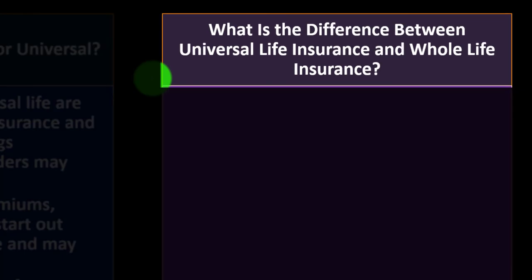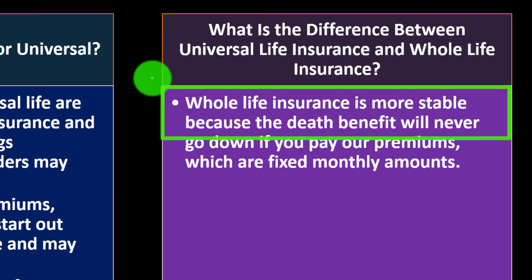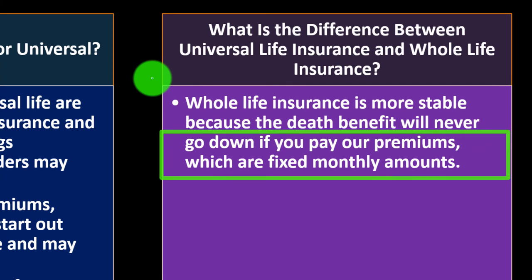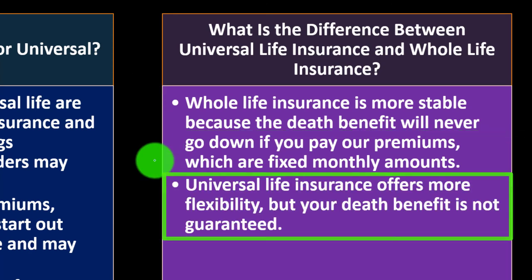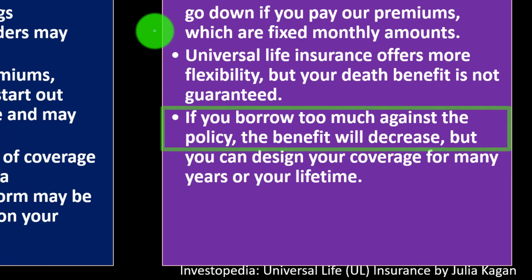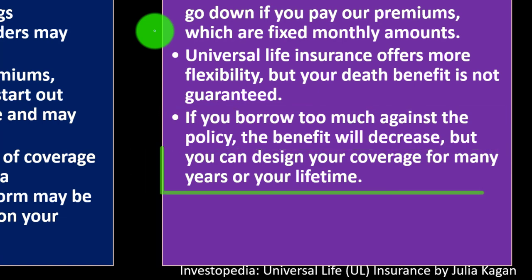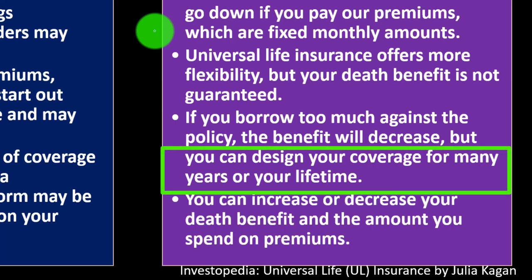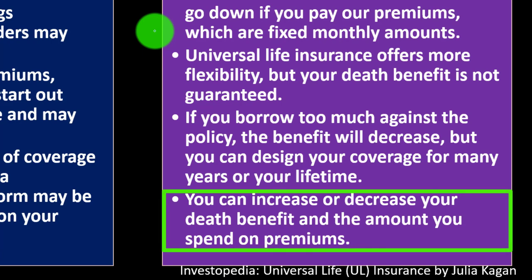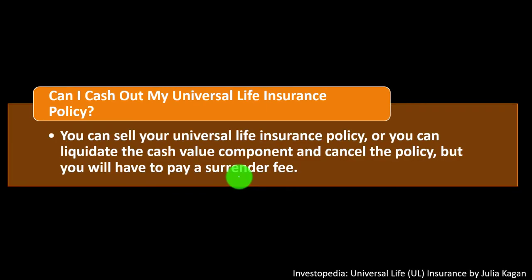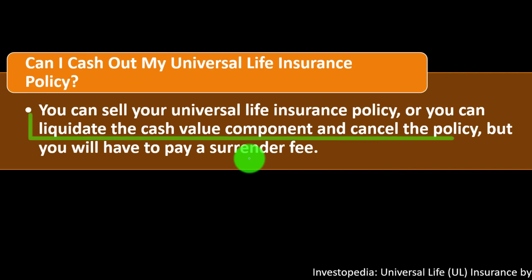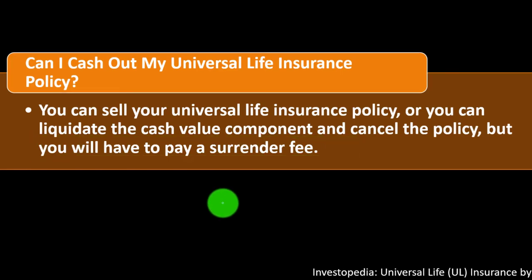What is the difference between universal life insurance and whole life insurance? Whole life insurance is more stable because the death benefit will never go down if you pay your premiums, which are fixed monthly amounts. Universal life insurance offers more flexibility, but your death benefit is not guaranteed — if you borrow too much against the policy, the benefit will decrease, though you can design your coverage for many years or your lifetime. You can increase or decrease your death benefit and the amount you spend on premiums. You can also sell your universal life insurance policy or liquidate the cash value component and cancel the policy, but you will have to pay a surrender fee.